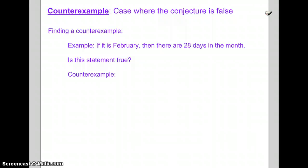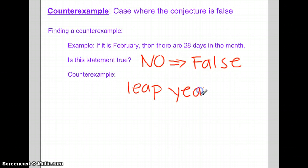Let's look at this example. If it is February, then there are 28 days in the month. Is this statement true? No. It's false. Why is it false? Because I can give you one example why it's false. What about the leap year? The leap year makes February 29 days. Because I gave you one example of why this statement is false, it is no longer true.